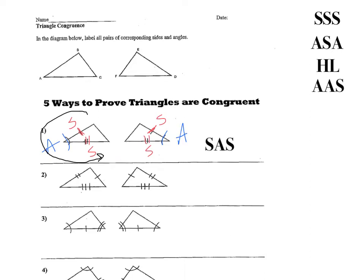The next one — if you take a careful look, we have three different sides that are congruent to three different sides in another triangle. So we're going to use side, side, side for this one.